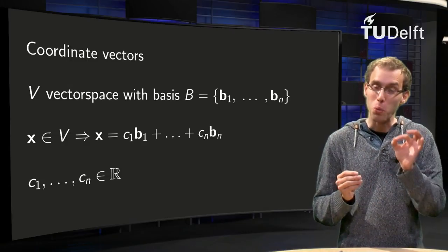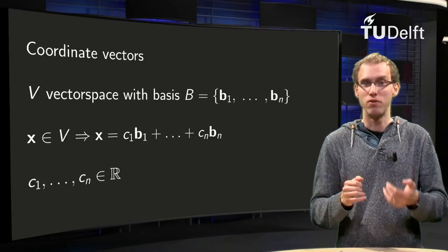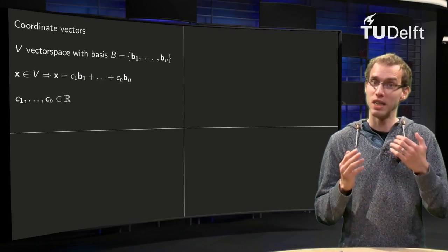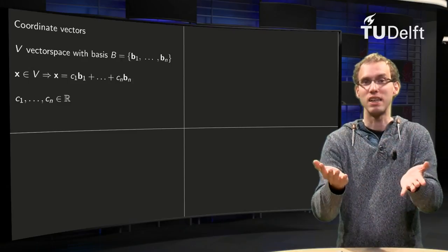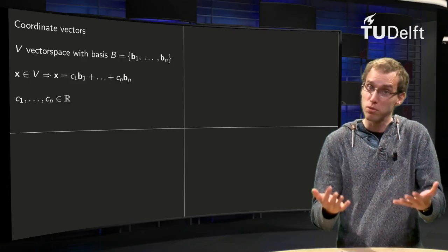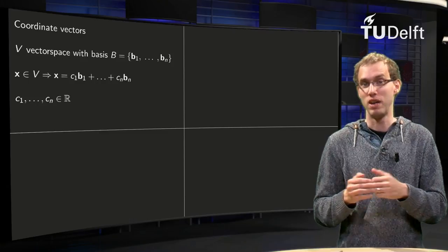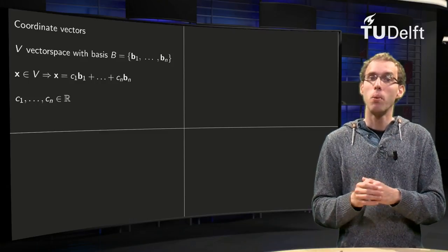And now the nice part is, those weights are just numbers, those weights are scalars, those weights are numbers in R. That's what the basis is. I can express any vector x in my vector space V in terms of my basis vectors by weights, and those weights are numbers.